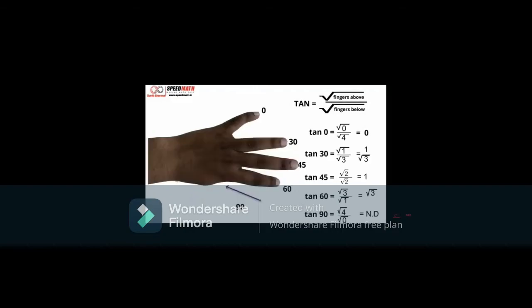Now let's find tan of 90. We can see that above thumb, there are 4 fingers and below there is no finger. By formula, we get root of 4 by root of 0. We know that if the denominator is 0, then the fraction is not defined. Therefore, tan of 90 comes out to be not defined.